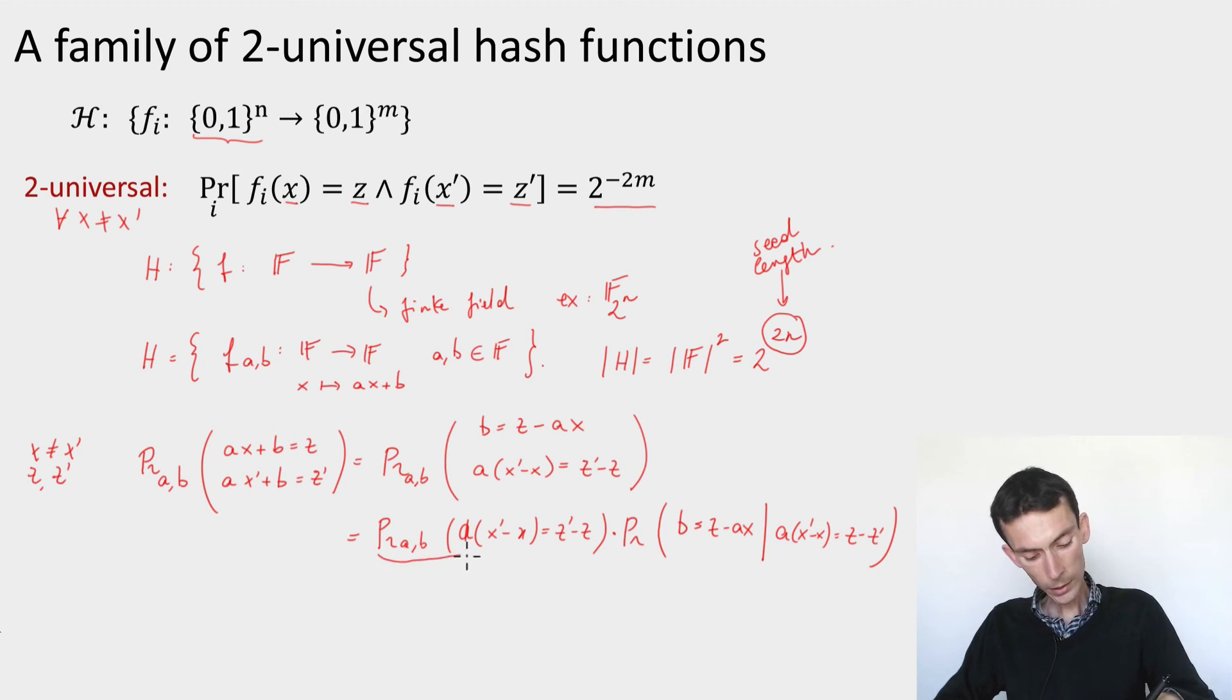Now this first probability here, it only involves a, and because x is different from x prime, this is important, I can divide—this is a finite field. And on the right hand side I would have a fixed element, (z prime minus z) divided by (x prime minus x). I take a uniformly at random. What's the probability that it hits that fixed element?